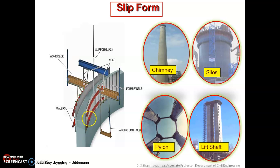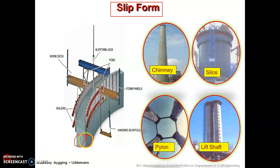The formwork moves semi-continuously with respect to the concrete surface at a regulated speed. When concrete is exposed, it is able to support its own weight, resist vertical pressure from the concrete still in the form, and withstand lateral pressure caused by wind.